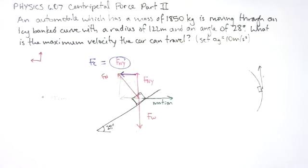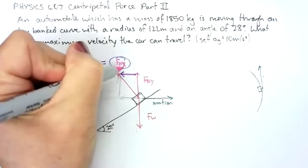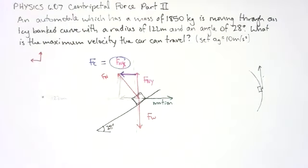So what's providing my centripetal force? It should be an x. It's the horizontal portion of my normal force. Not the whole normal force, only this horizontal portion.